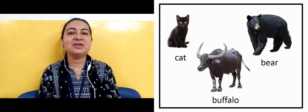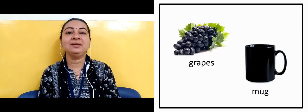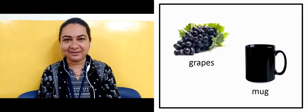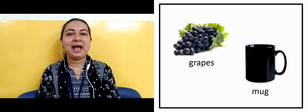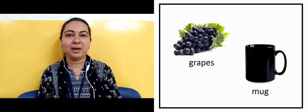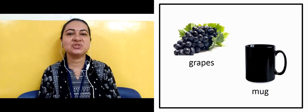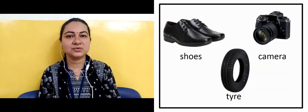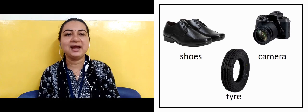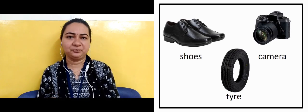The next slide shows us grapes and these grapes are in black color. Another one is a mug and this mug color it is black in color. The next slide shows us shoes — formal shoes — and its color it is black in color. Another one is a camera.